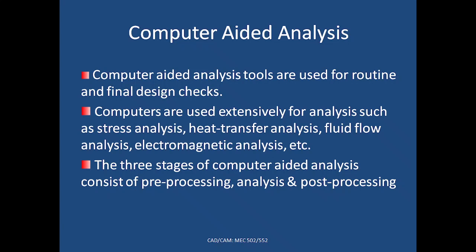Every computer-aided analysis software has three stages: pre-processing, analysis, and post-processing. Pre-processing is when you provide all the information to the system so it can be used for analysis. For example, for a simply supported beam in mechanics of materials, this requires information about the material — Poisson's ratio or modulus of elasticity — the cross-section, the type of support, and the type of loading. All that information defined via computer application is known as pre-processing.